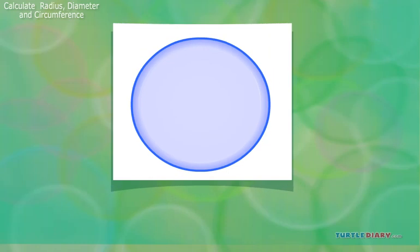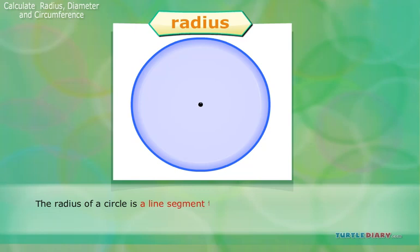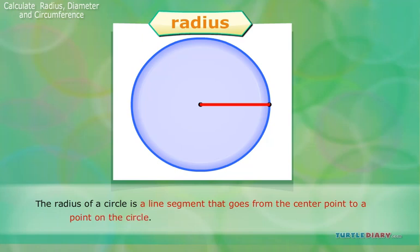Radius. The radius of a circle is a line segment that goes from the center point to a point on the circle. Thus, it goes halfway through the circle.